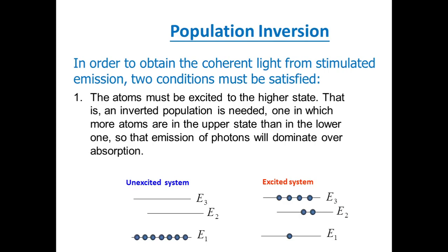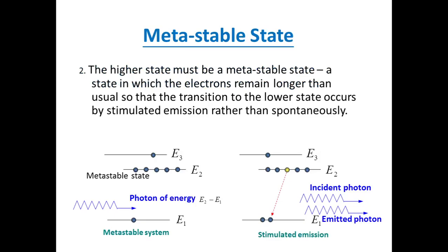For spontaneous emission, the lifetime of an electron in the excited state is very low — around 10 to the power of minus 8 seconds. There is another concept called the metastable state, where the electron stays for more time than in the excited state — around 10 to the power of minus 3 seconds. This helps for stimulated emission, as more electrons remain in the excited state for a longer time. The higher state must be the metastable state, so that transition to the lower state occurs by stimulated emission rather than spontaneously.